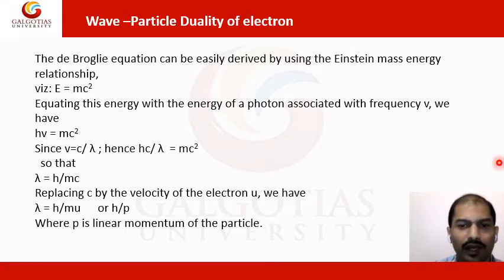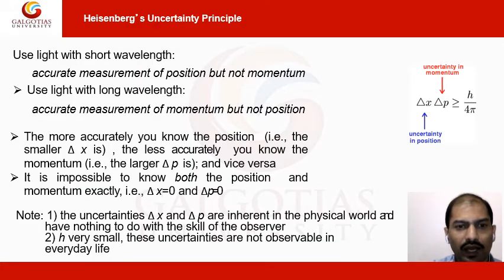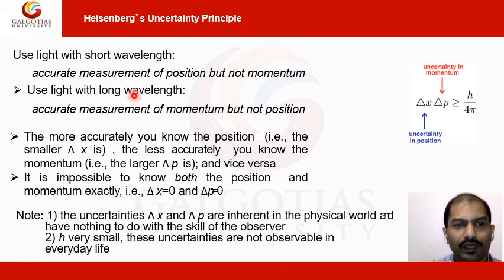De Broglie was awarded the Nobel Prize for this work explaining wave and particle nature of light, and it has great relevance for explaining the characteristics and properties of different matter and waves. Now, coming to another topic in this lecture: the Heisenberg uncertainty principle. You may be aware of this from undergraduate studies. As the name suggests, there is uncertainty — specifically in position and momentum.